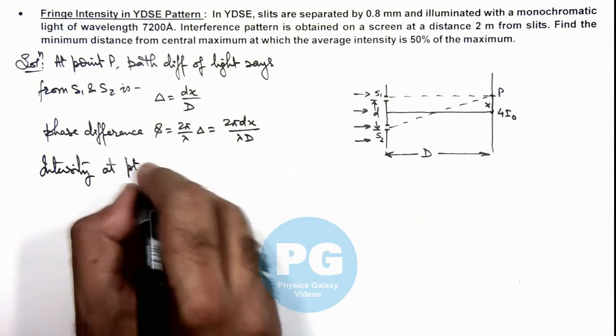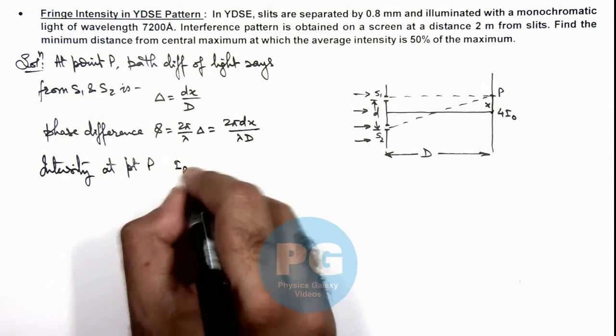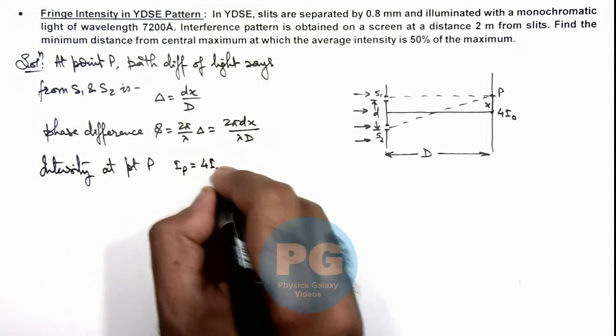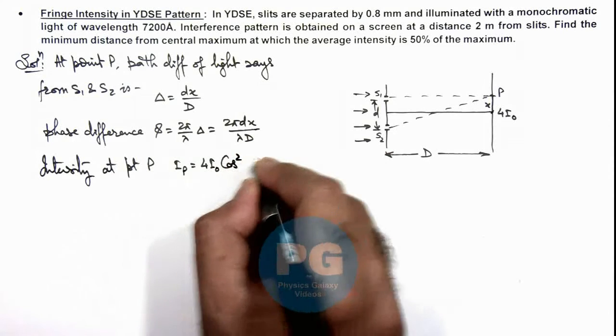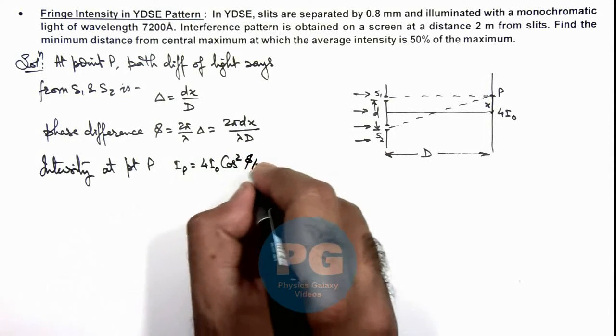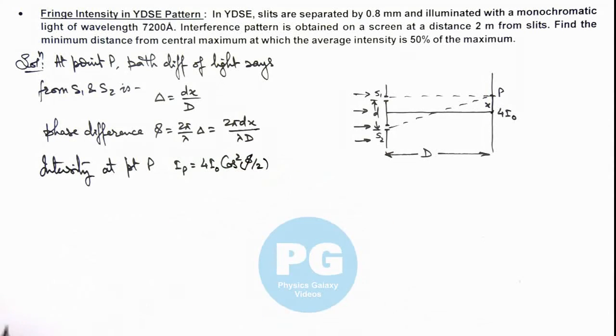At point P we can write as Iₚ is 4 I₀ cos² (φ/2). This also we have already studied.